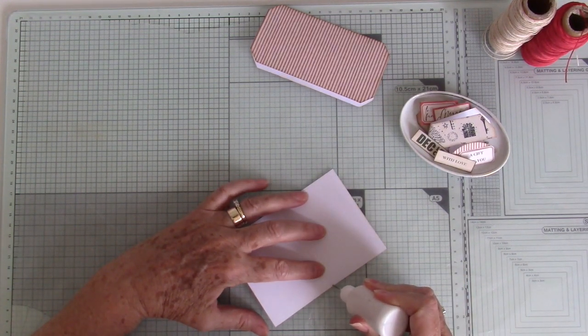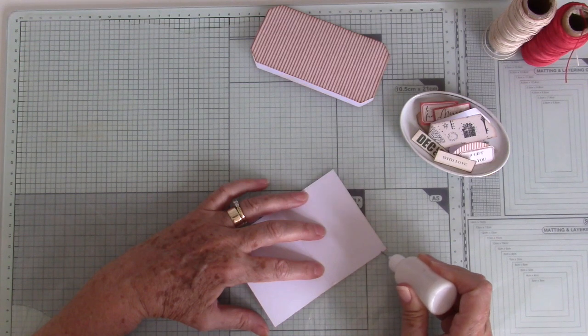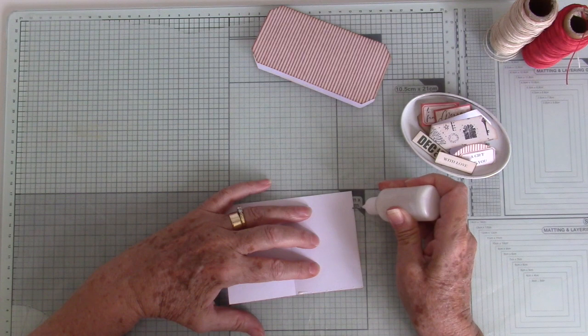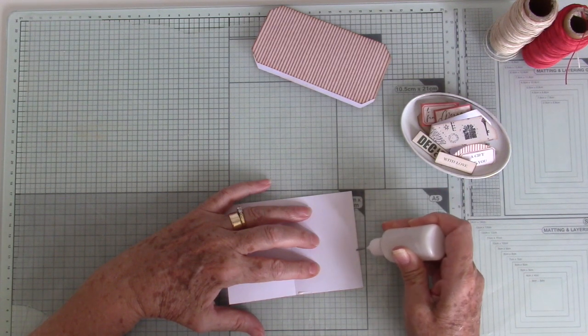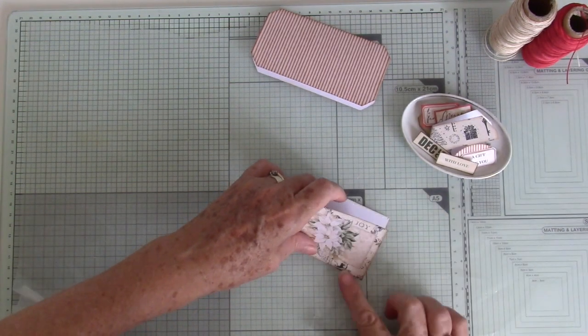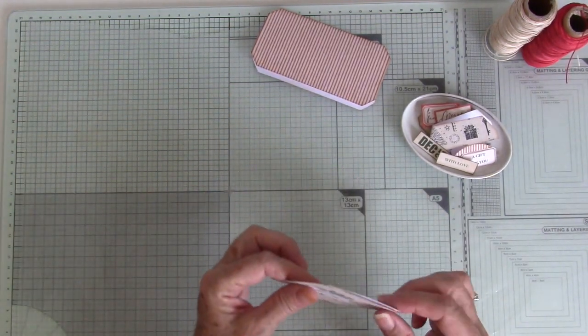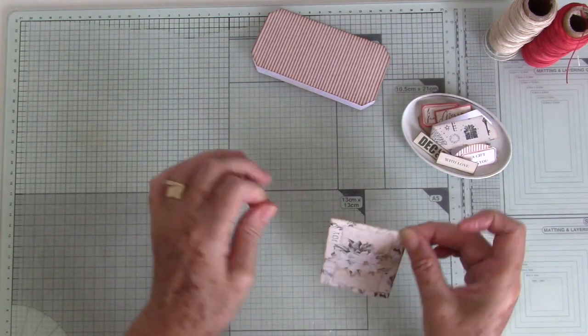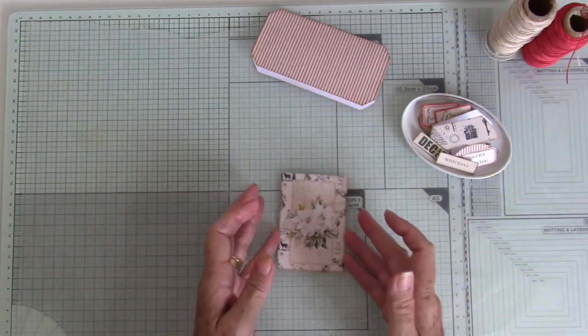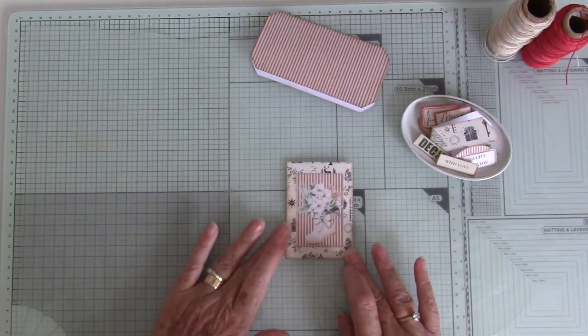This is the pocket for the gift card. So I'm going to ink along two sides, leaving the top open, obviously. It's a bit generous on the bottom there. Okay, so that is that piece.